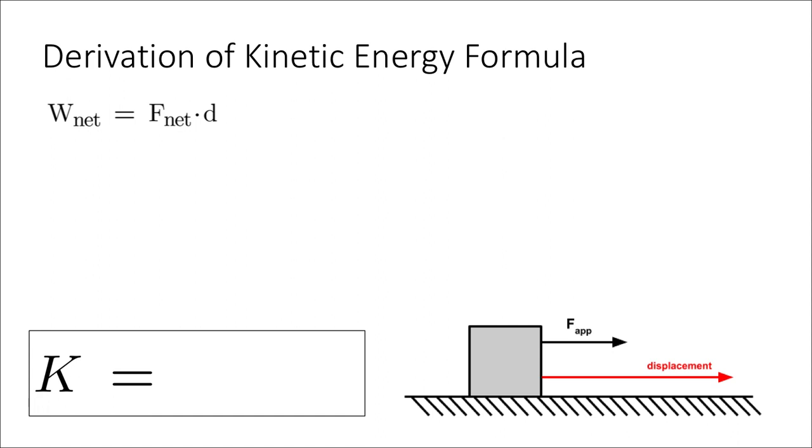And so if the net work on any object is equal to the net force of that object times d its displacement, this is a simplified form of fd cosine theta, assuming like in the diagram on this slide, the applied force and the displacement are in the same direction, cosine theta is just one.